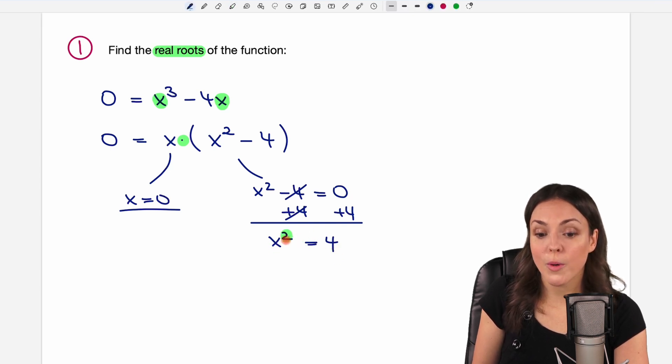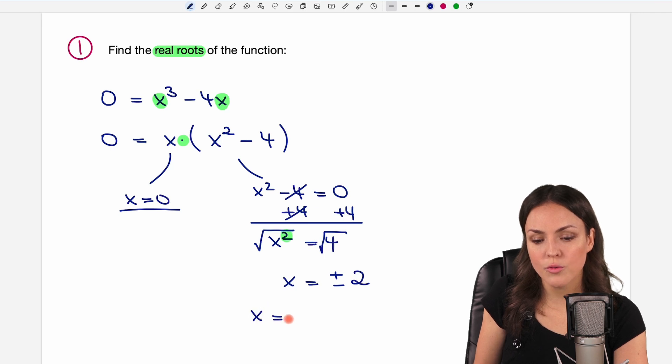Now we have x squared equals four. We want to get rid of the square to solve for x. So we take the square root on both sides. If we do that in an equation, we get two results, a positive and a negative result. The square root of four equals two.